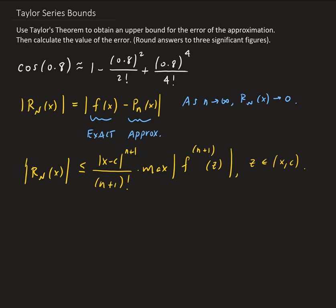In our case, we're approximating cosine of 0.8. We're dealing with degree 4 here for our polynomial. Since we're dealing with cosine, cosine has a maximum value of 1, and so does sine. So the (n+1)th derivative will cycle through cosines and sines, positive and negative.